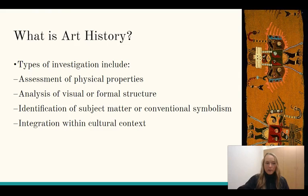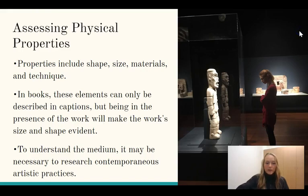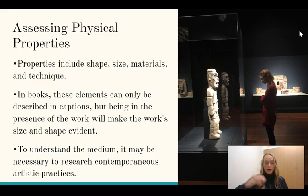So let's talk a bit more about these four types of investigation: assessment of physical properties, analysis of visual or formal structure, identification of subject matter or conventional symbolism, and integration within a cultural context. When we assess physical properties, this includes size, shape, materials, and the technique used to create the work of art.